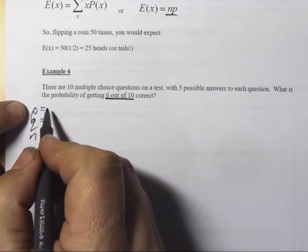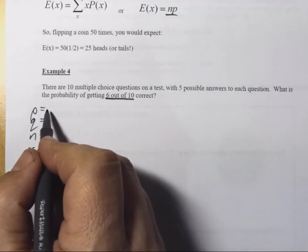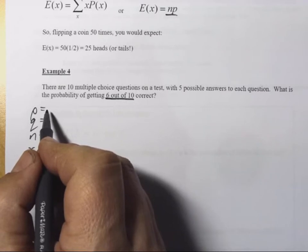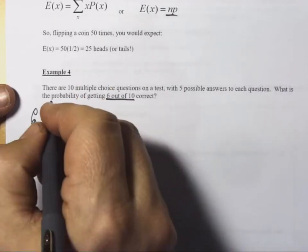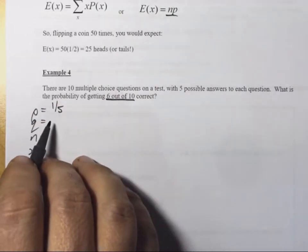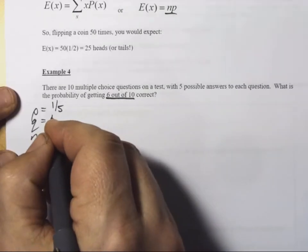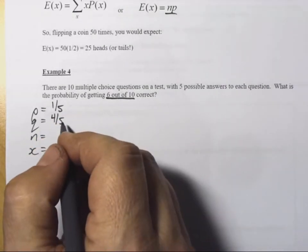What is the probability of success? Well, think about success here as guessing the question correctly. If there are 5 possible answers to each question, then you have a 1 in 5 chance of guessing each question correctly. That also means that you have a 4 in 5 chance of failing, of not guessing it correctly.